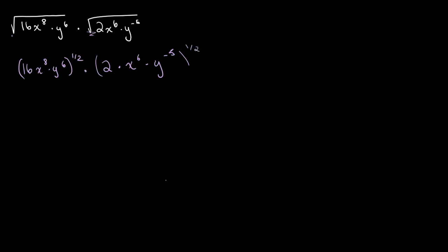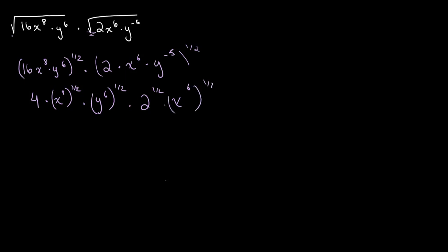Writing out this whole thing over and over again may seem very tedious, but it's really important if we want to avoid making simple mistakes. So let's simplify this further. We know that this is essentially the same thing as saying 16 to the power of 1 over 2, multiplied by x to the 8th to the power of 1 over 2, multiplied by y to the 6th to the power of 1 over 2, times 2 to the power of 1 over 2, times x to the 6th to the power of 1 over 2, times y to the minus 5 to the power of 1 over 2.